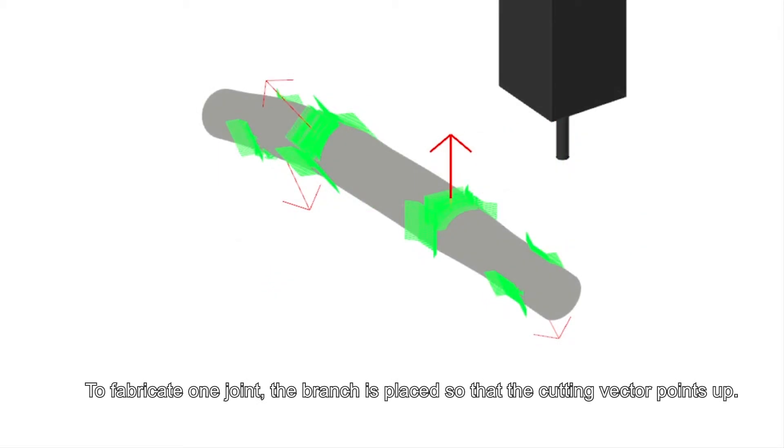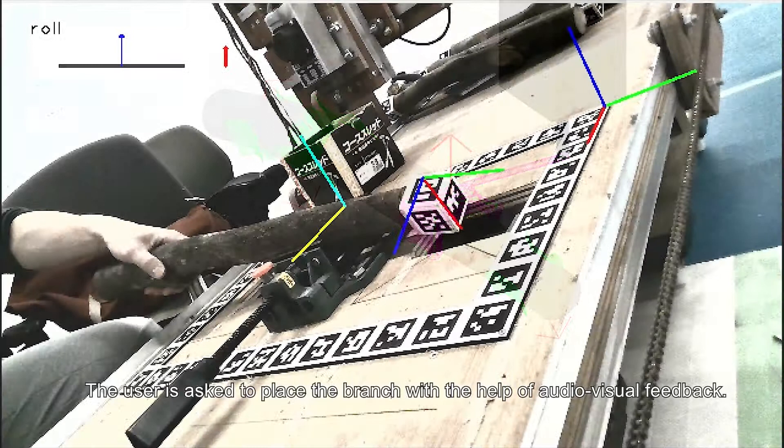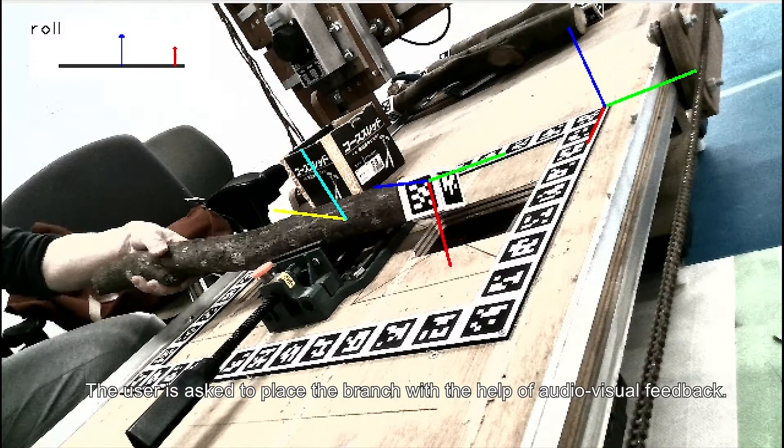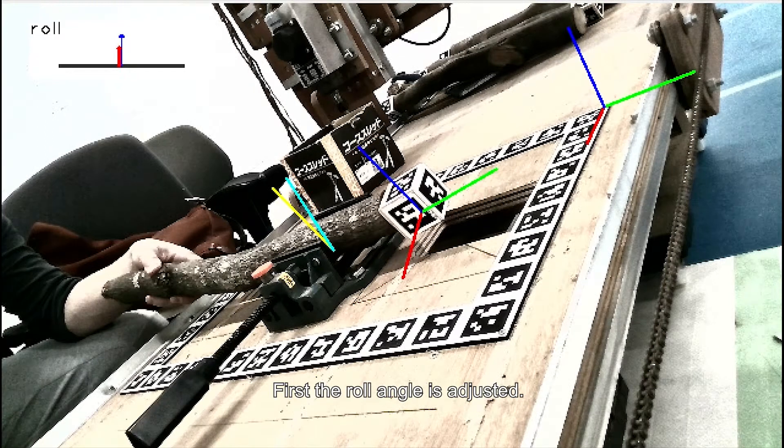To fabricate one joint, the branch is placed so that the cutting vector points up. The user is asked to place the branch with the help of audiovisual feedback. First, the roll angle is adjusted. The roll angle is set.